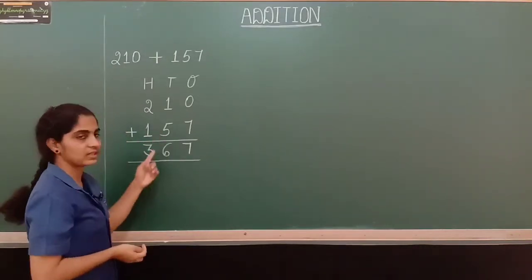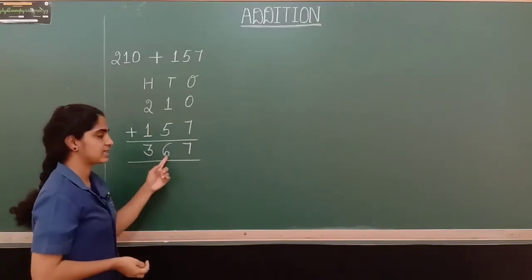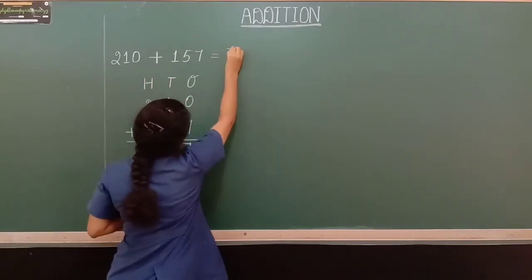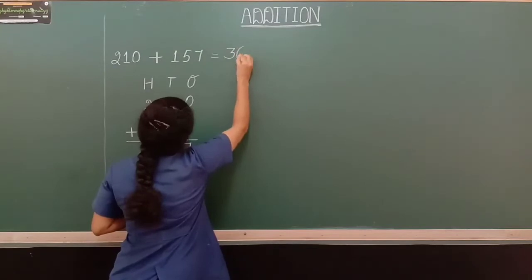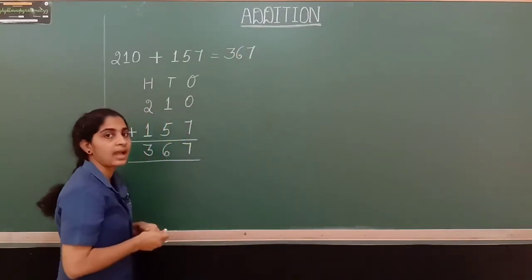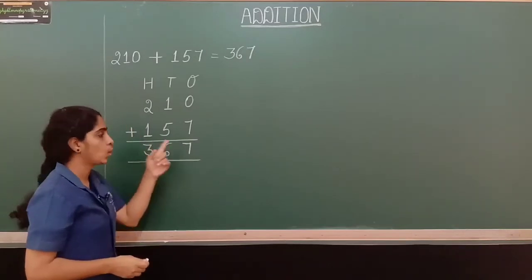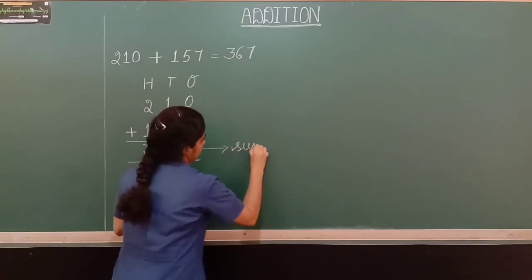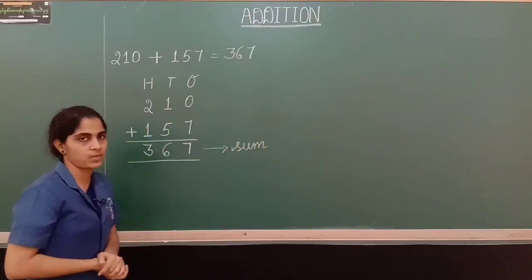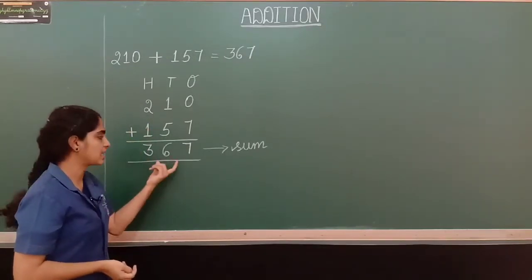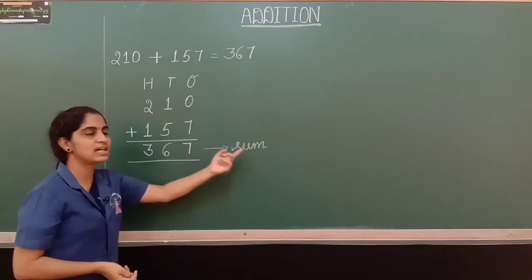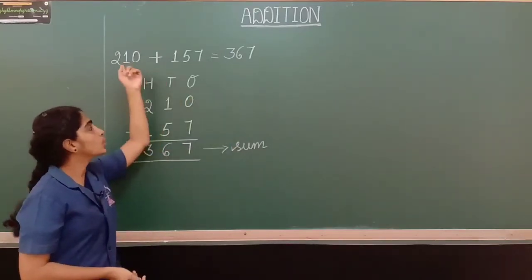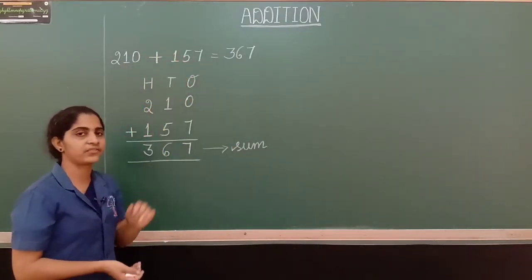The answer we got is 367. That means altogether they have planted 367 saplings. When we add numbers, whatever answer we get is called the sum. So 367 is the sum of 210 and 157.